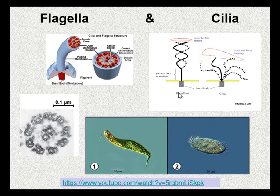Despite their differences in length and number, flagella and cilia share a common structural arrangement of microtubules called a 9+2 array — a ring of 9 microtubule doublets surrounding a single microtubule doublet in the center. Flagella operate like a propeller and spin in circles, while cilia move back and forth.